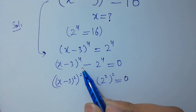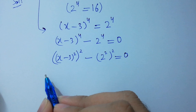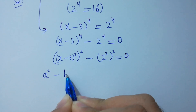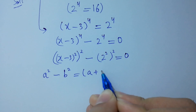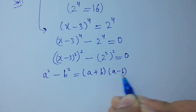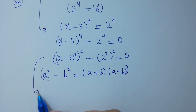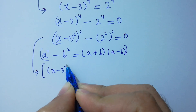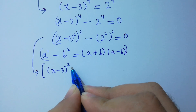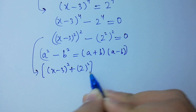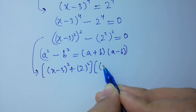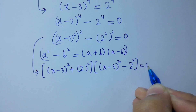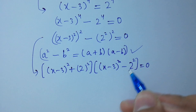Since 2 times 2 equals 4, we know that a squared minus b squared equals (a plus b)(a minus b). Applying the formula of a squared minus b squared, we proceed to solve this.